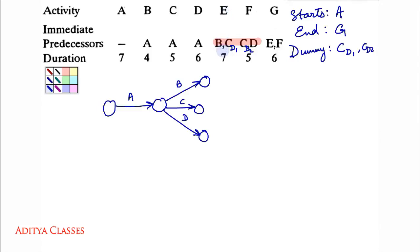Then we have E. Now we know beforehand that E is coming from B and not C rather dummy of C. So what do I do? I will take a dummy of C.